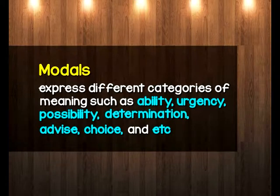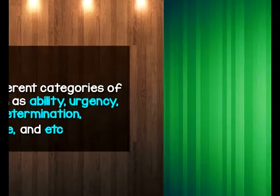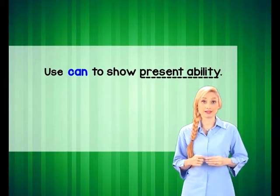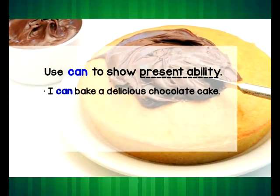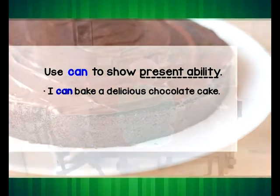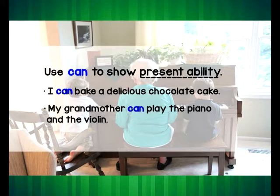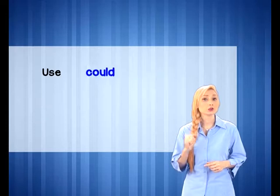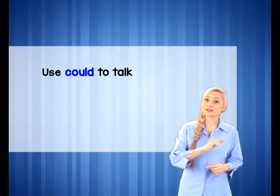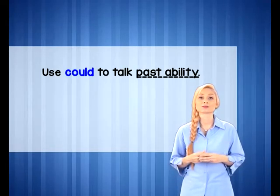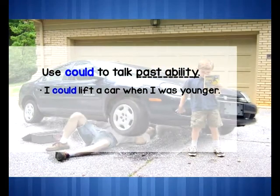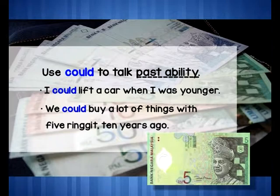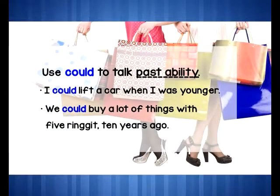Here are the modals and their categories of meaning. We use 'can' to show present ability, like this: 'I can bake a delicious chocolate cake.' 'My grandmother can play the piano and the violin.' We use 'could' to talk about past ability, like this: 'I could lift a car when I was younger.' 'We could buy a lot of things with RM5 ten years ago.'